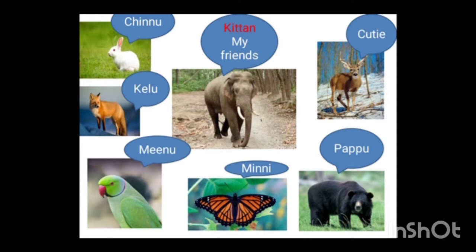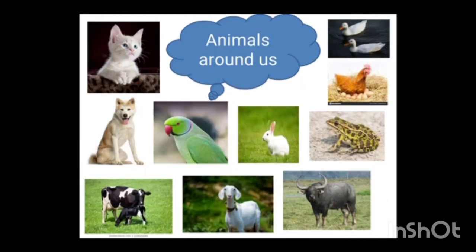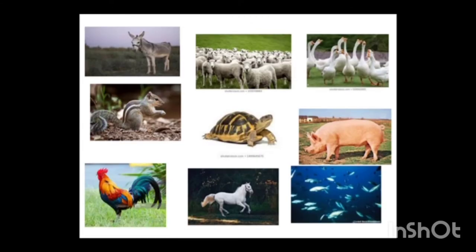Now let us see what animals we can see around us: cat, dog, cow and a calf, parrot, goat, rabbit, buffalo, frog, hen, duck, donkey, squirrel, rooster, horse, fish, pigs, sheep, goose, etc.